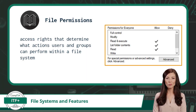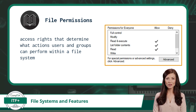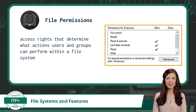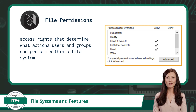File permissions are access rights that determine what actions users can perform within a file system. These permissions are set by the file's owner or system administrator to control who can read, write, execute, or have full control over the file, enhancing data security and preventing accidental data loss. The read permission allows users to view file contents. The write permission allows users to modify, add, delete, or rename files. The execute permission allows users to run a file if it is an executable program or script.